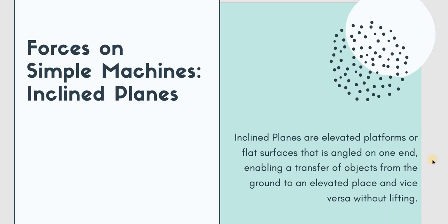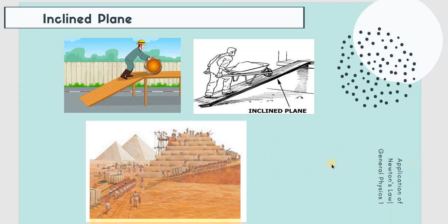Just a short definition of inclined plane: these are elevated platforms that are angled on one end, that enable us to move objects easier and faster. It would be easier to slide a load rather than lifting it. Even during ancient times, people used this so that their work would be easier and faster.